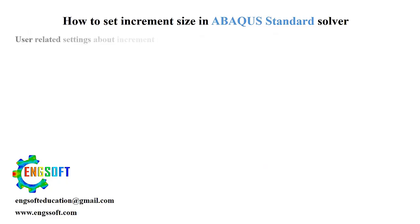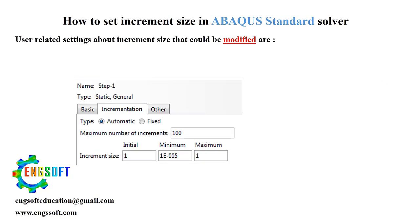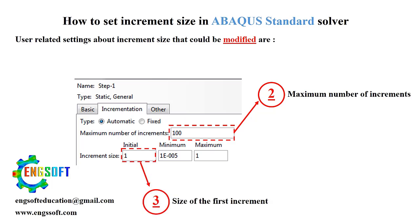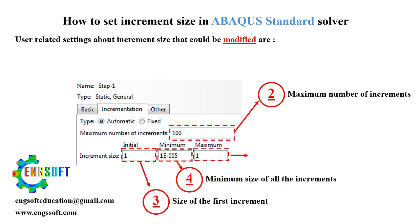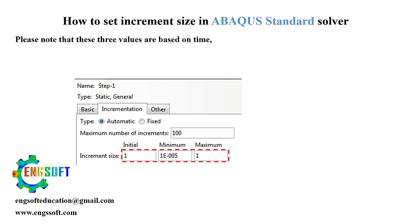First, let's introduce the 5 key parameters that you need to adjust for the best performance: 1. Time period for the entire step. 2. Maximum number of increments. 3. Size of the first increment. 4. Minimum increment size. 5. Maximum increment size. Abaqus automatically adjusts increment sizes to achieve convergence and reduce computational cost, but understanding how to tweak these settings will give you better control. Note that these three values are based on time, so the ratios of them to the time period show their size.